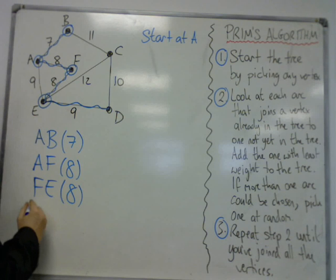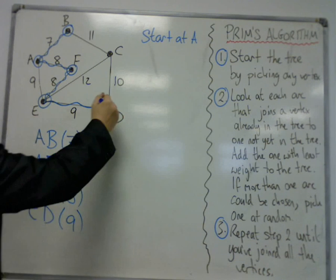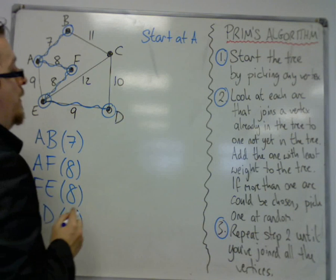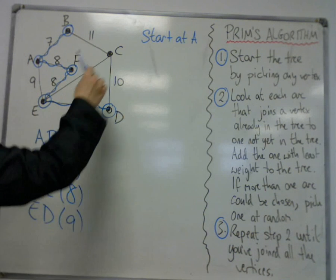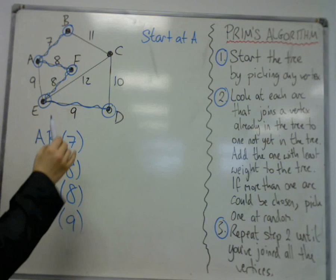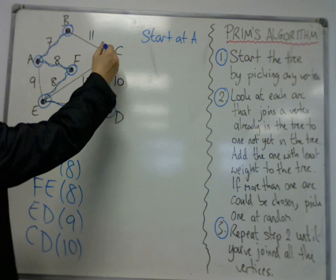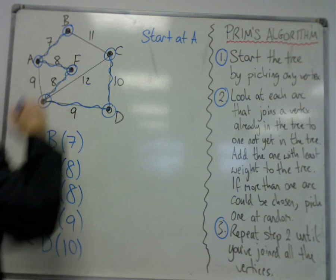E, D, 9. That's connected to D. So I've got one vertex left. And then the last one is C, D, 10. That's the shortest one.